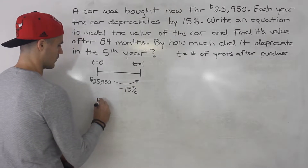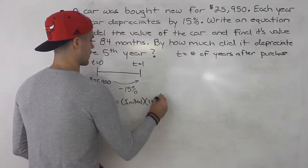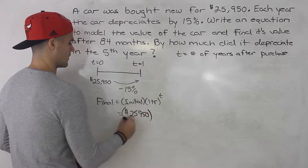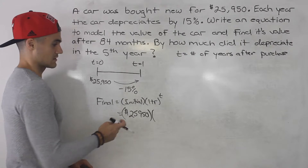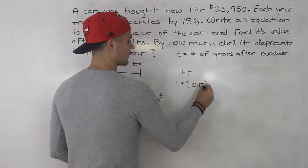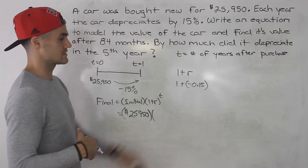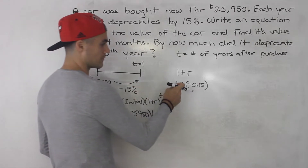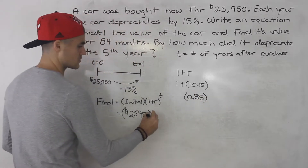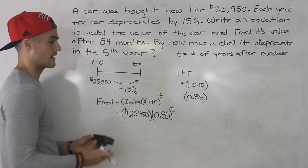To make an equation for this, we know the final amount equals the initial amount times (1 + r) to the power of t. The initial amount is $25,950. The car is depreciating by 15%, so r is negative 0.15. That means the bracket becomes (1 + (−0.15)) = (1 − 0.15) = 0.85. So the equation is 25,950 × (0.85)^t, where t is the number of years after purchase.